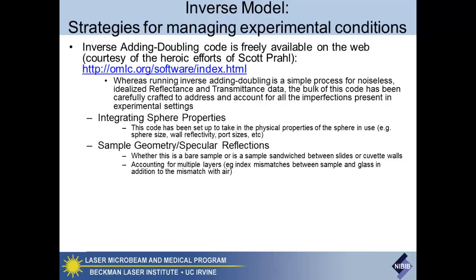This code also accounts for the sample geometry and specular reflection: is it a bare sample, what's the index of refraction of your bare sample versus air, any specular reflection in both transmittance and reflectance cases. Is it sandwiched between two pieces of glass, or in a cuvette? What are the optical properties of that cuvette, the index, the multiple reflections potentially occurring between the boundary between air, cuvette wall, sample, sample-cuvette wall, and inside the integrating sphere? It's been able to calculate all that stuff for you, which is a big headache to think about.